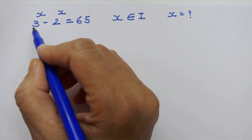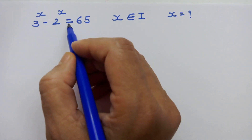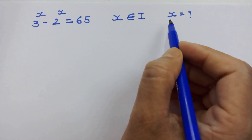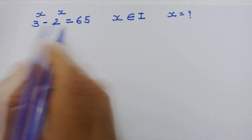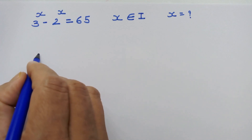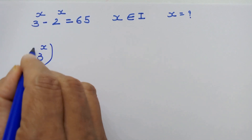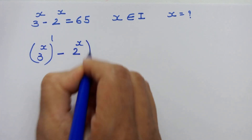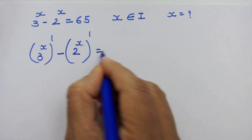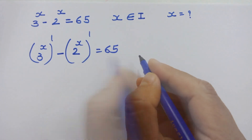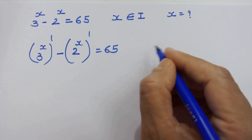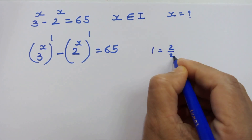Hello friends, here we have 3 raised to x minus 2 raised to x is equal to 65, where x is an integer. Let's find the value of x. In this equation, we can write 3 raised to x whole raised to 1 minus 2 raised to x whole raised to 1 is equal to 65, because every value must have 1 as an exponent. We can replace 1 with 2 upon 2.